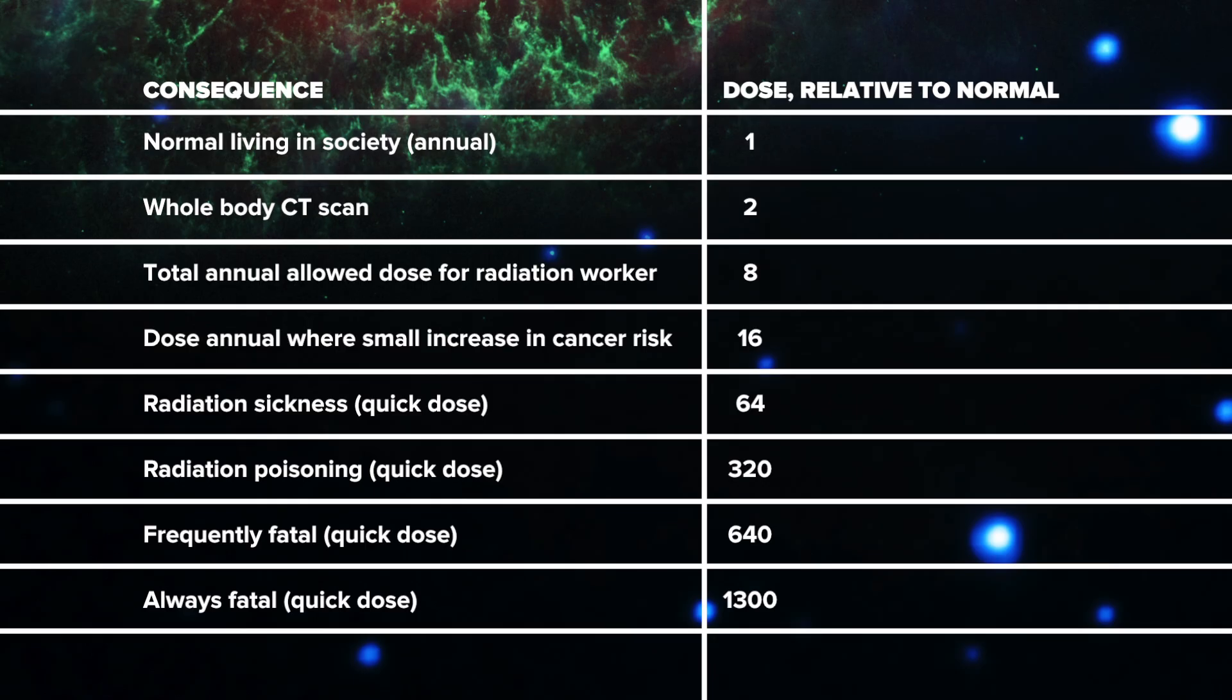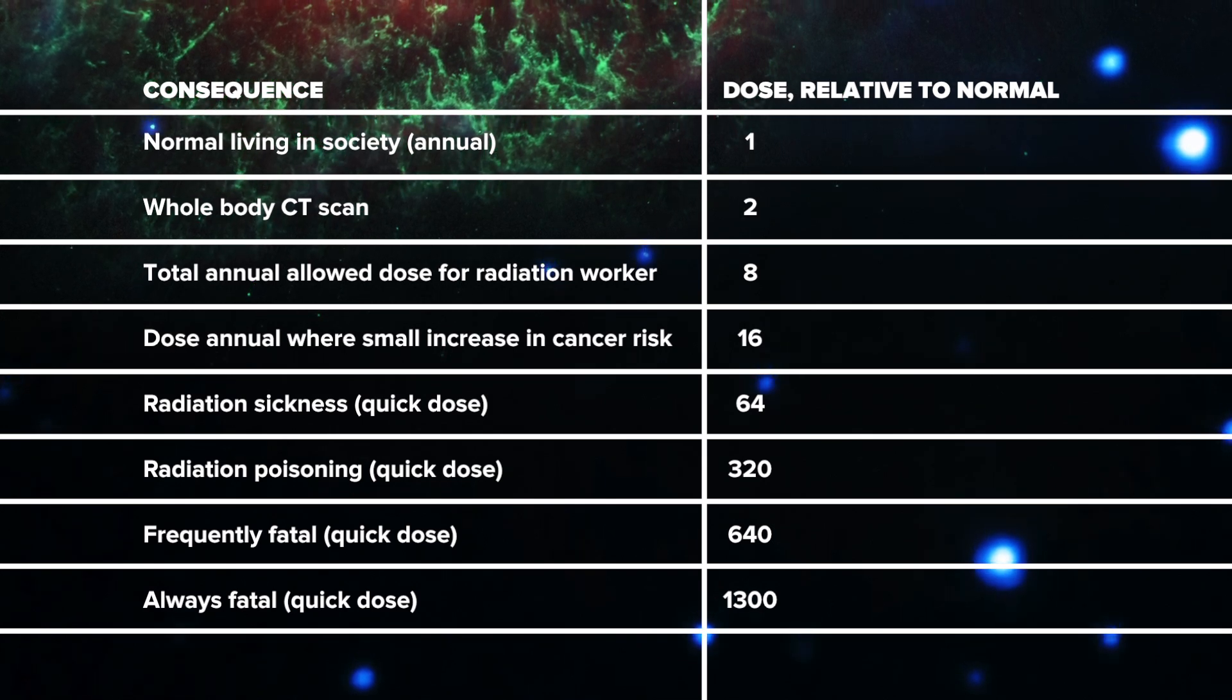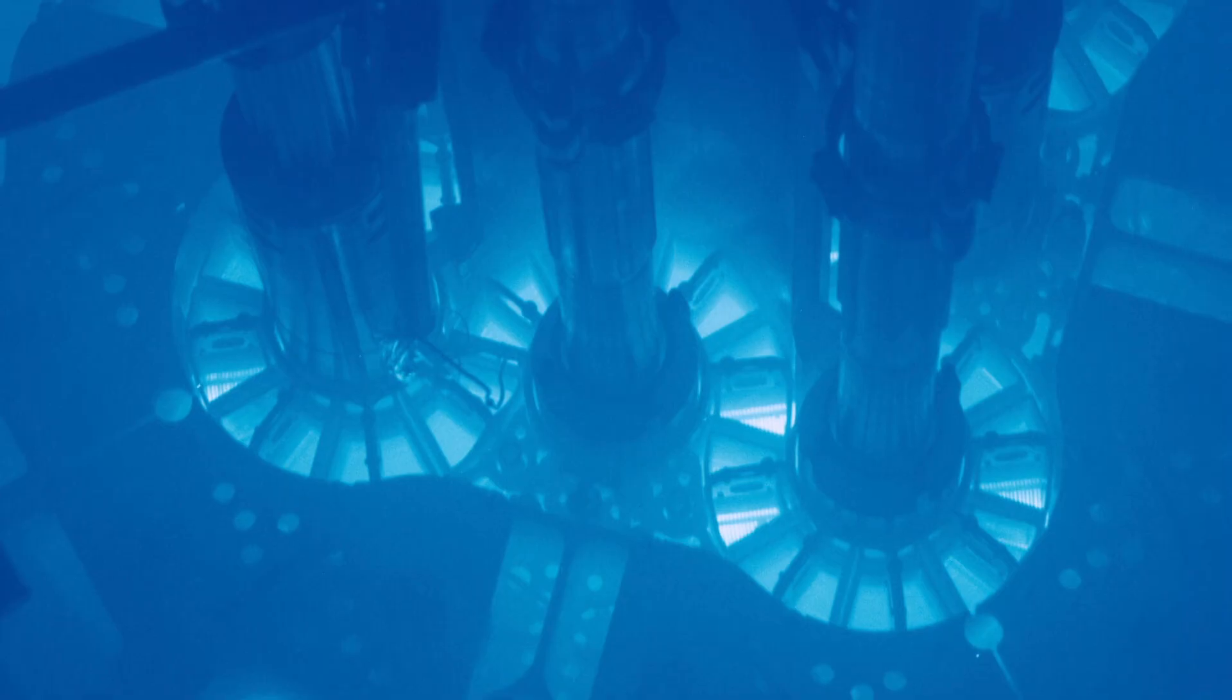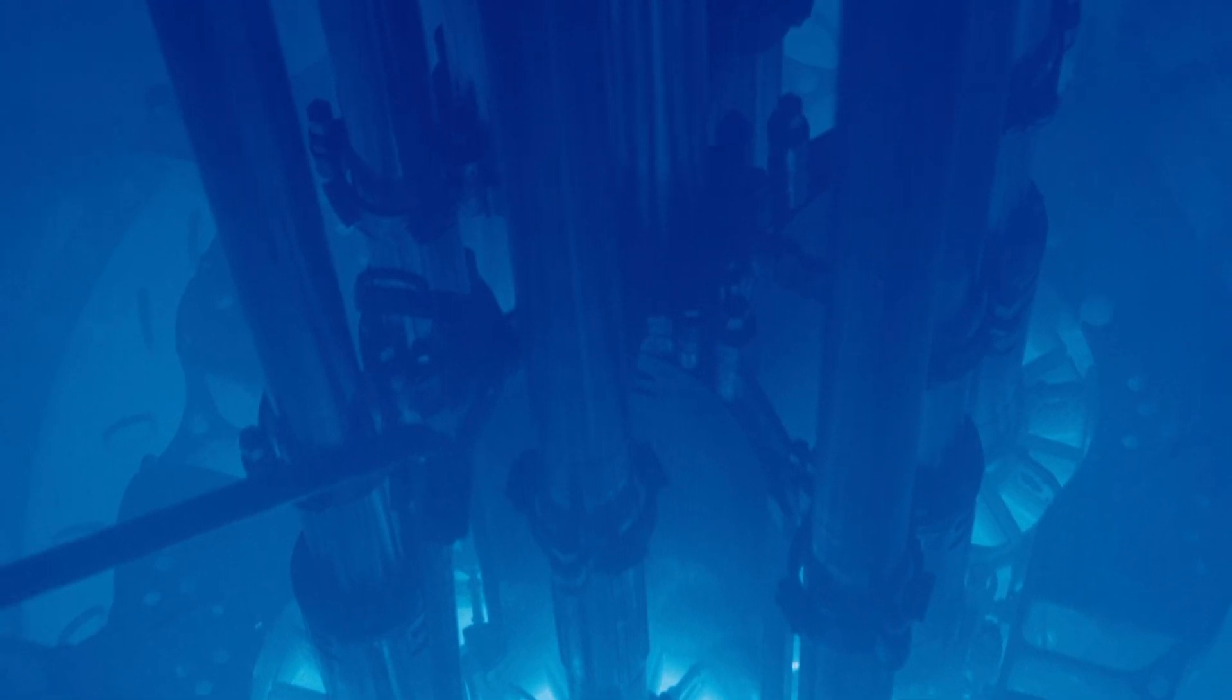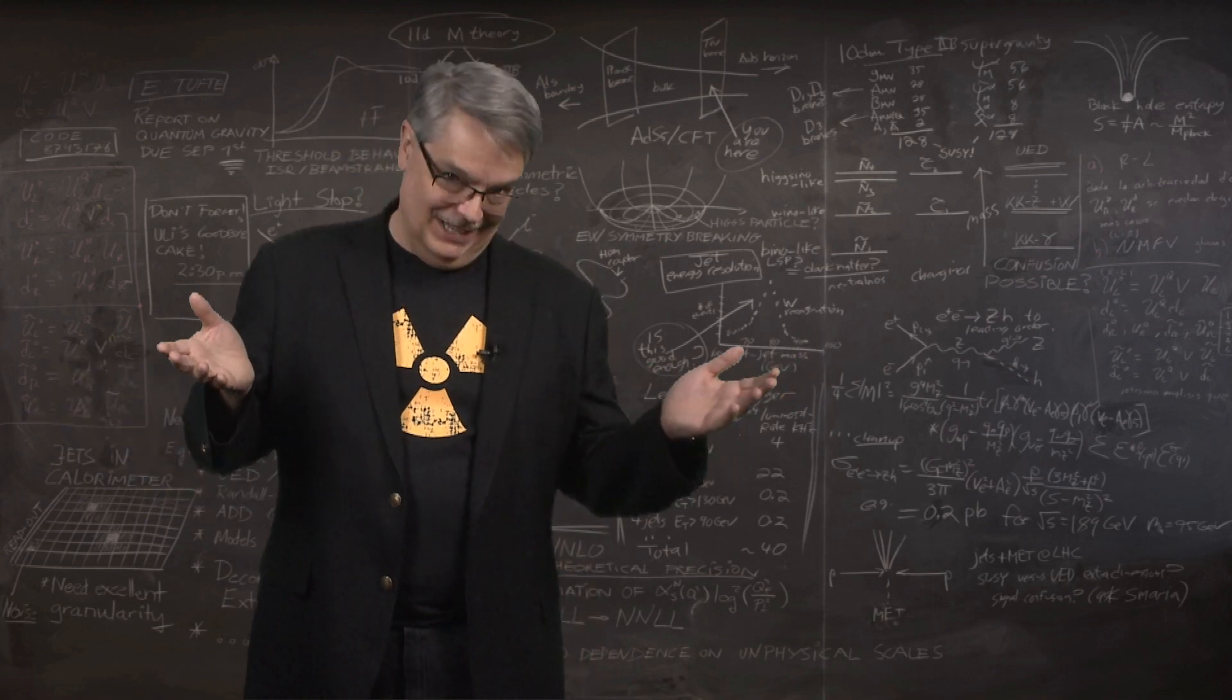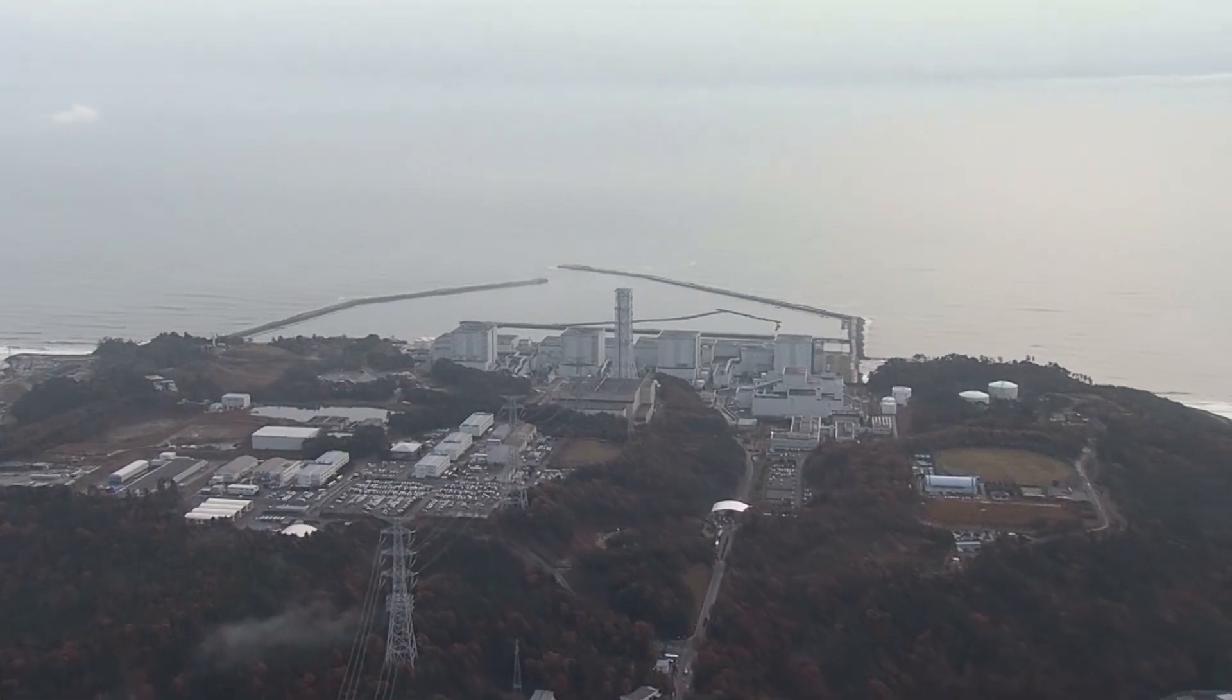So that was a lot of numbers. So this graphic kind of lays it all out. Okay, so what does that mean in terms of places you might go? Well standing for 10 minutes inside the Chernobyl reactor is over 8,000 times the normal annual dose. So it will kill you very, very dead. So don't stand there. I really hope I didn't actually need to tell you that.